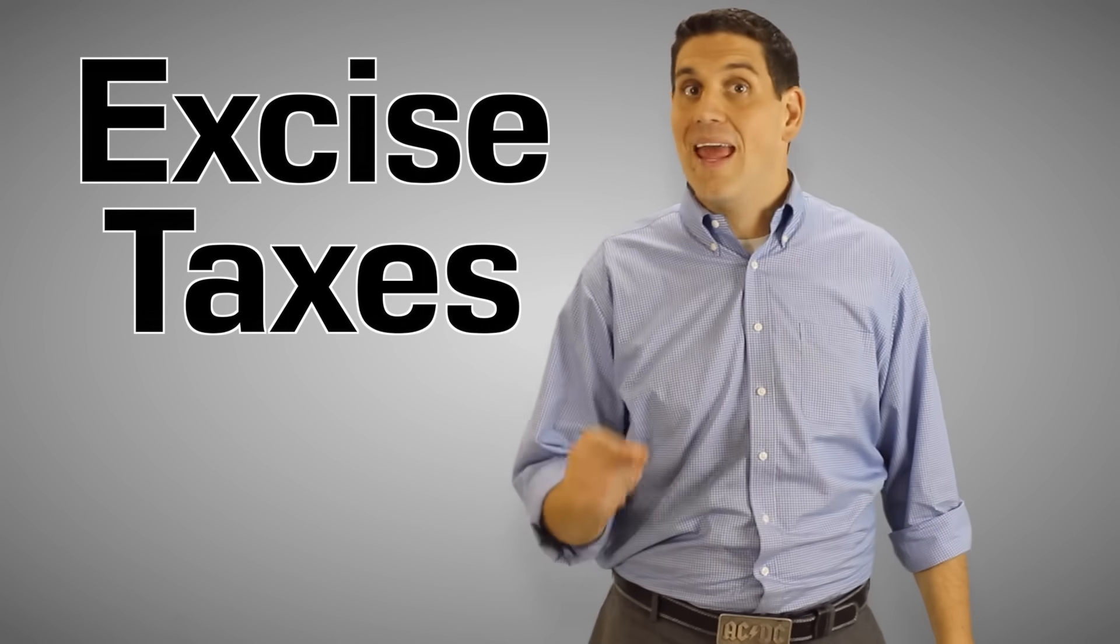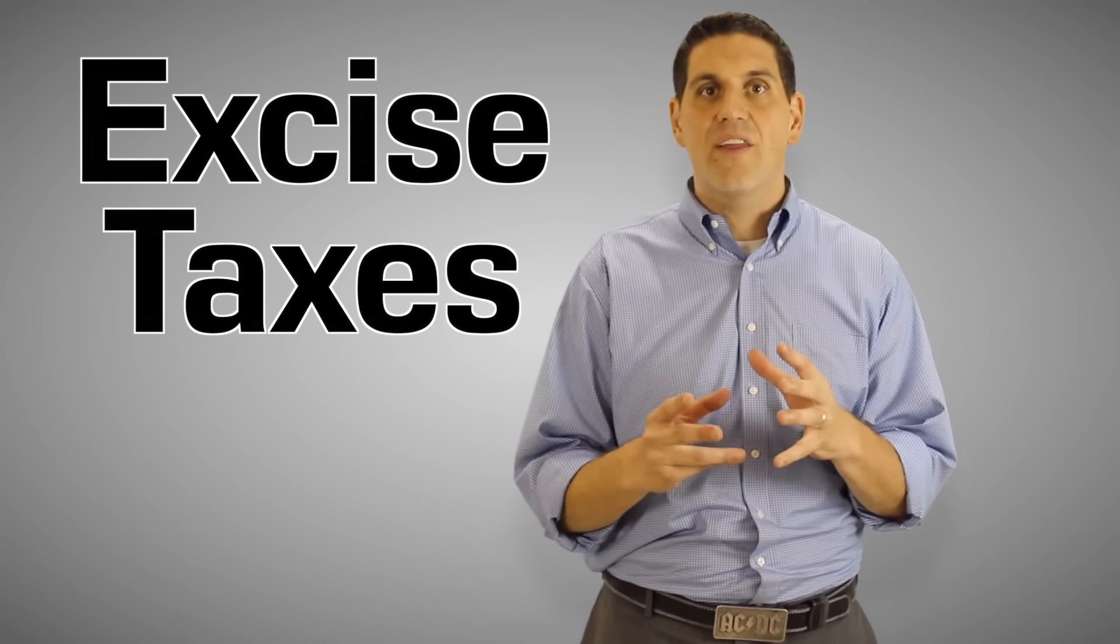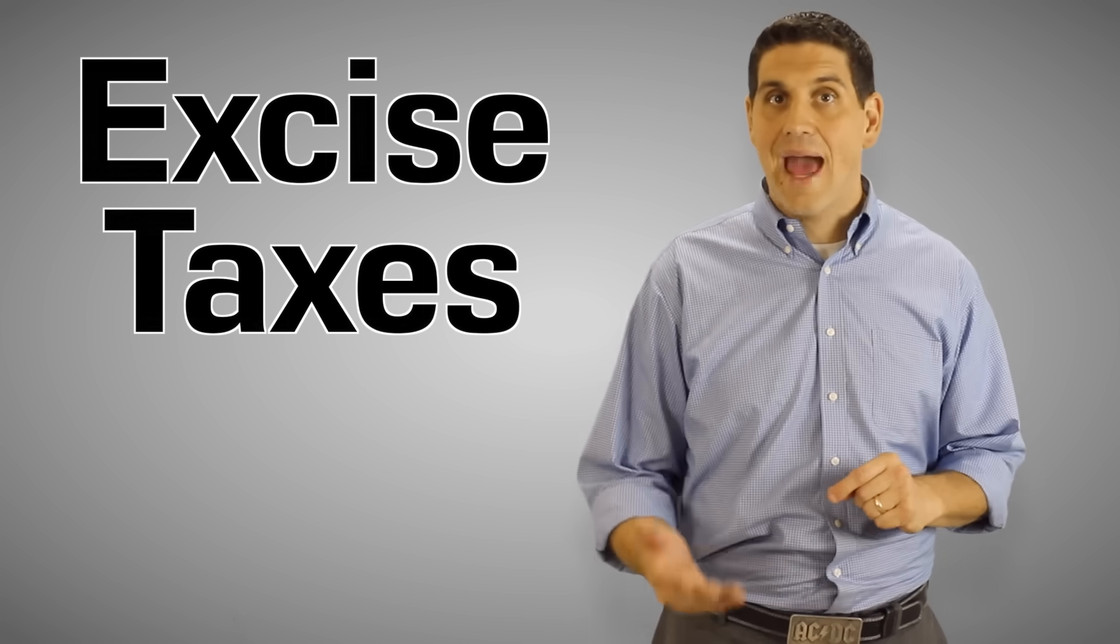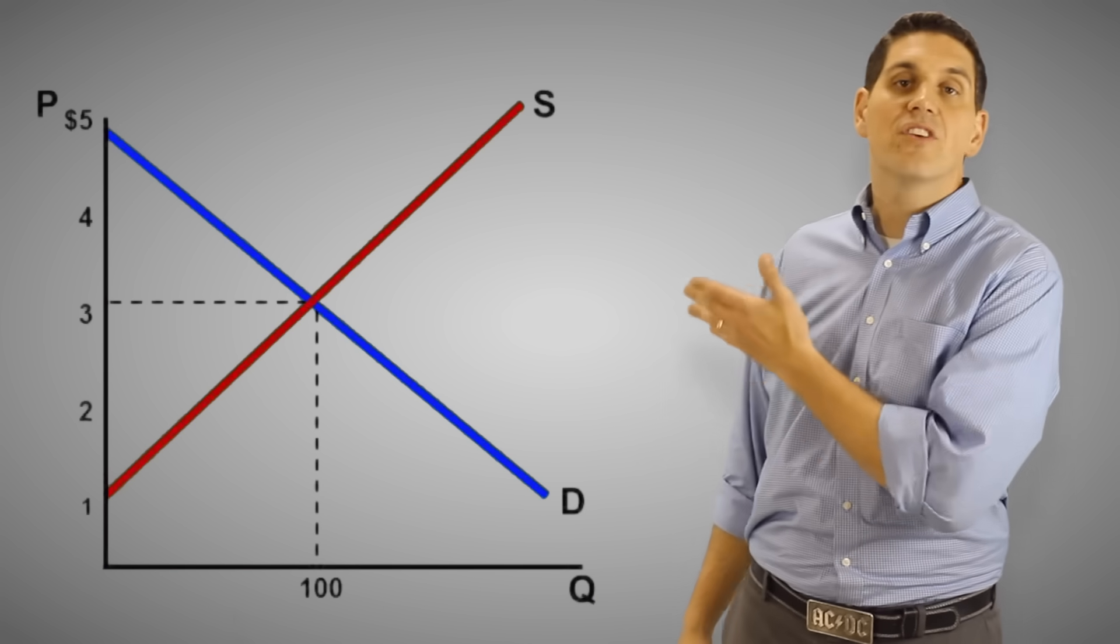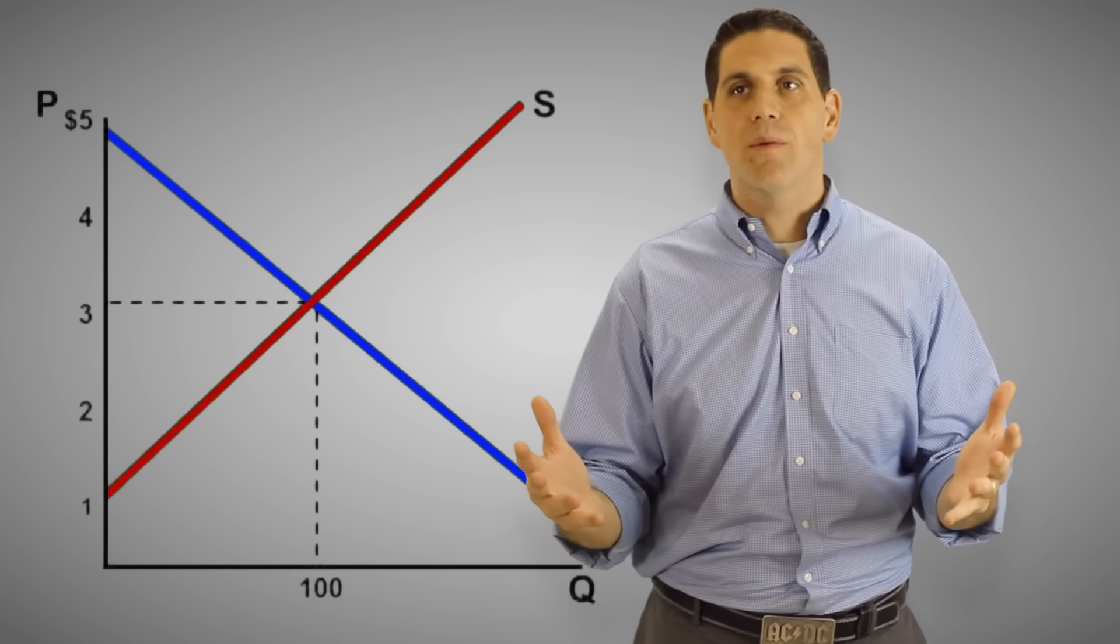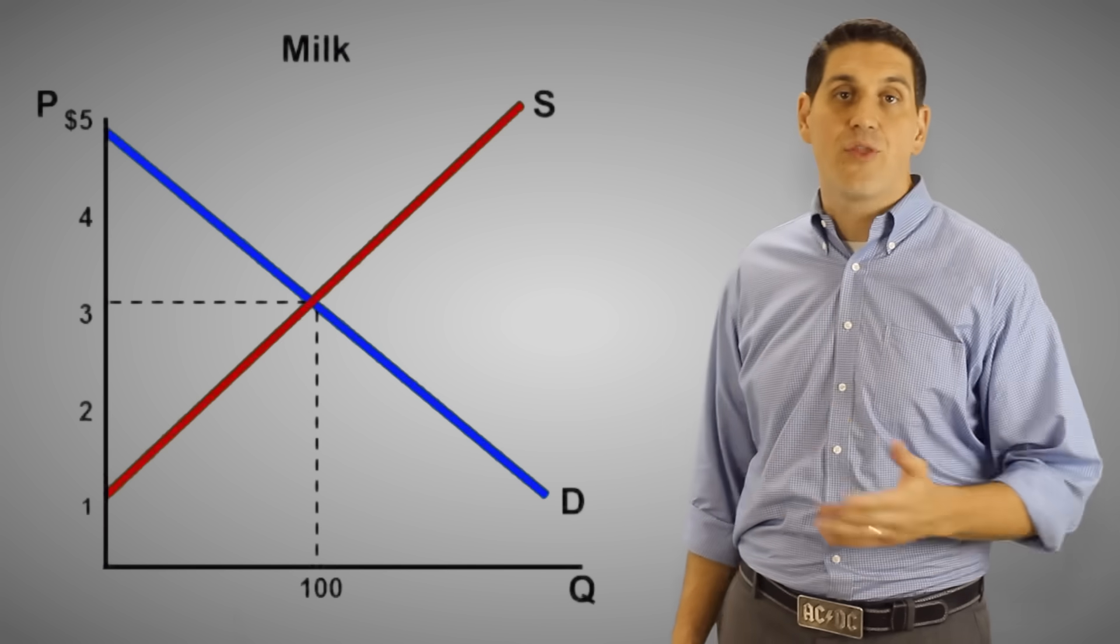Now you've learned about supply and demand and consumer surplus and producer surplus. It's time to put all those things together and talk about taxes. A per unit tax or an excise tax is a tax on producers. So right here, let's have the supply and demand for some random product. Let's say milk.